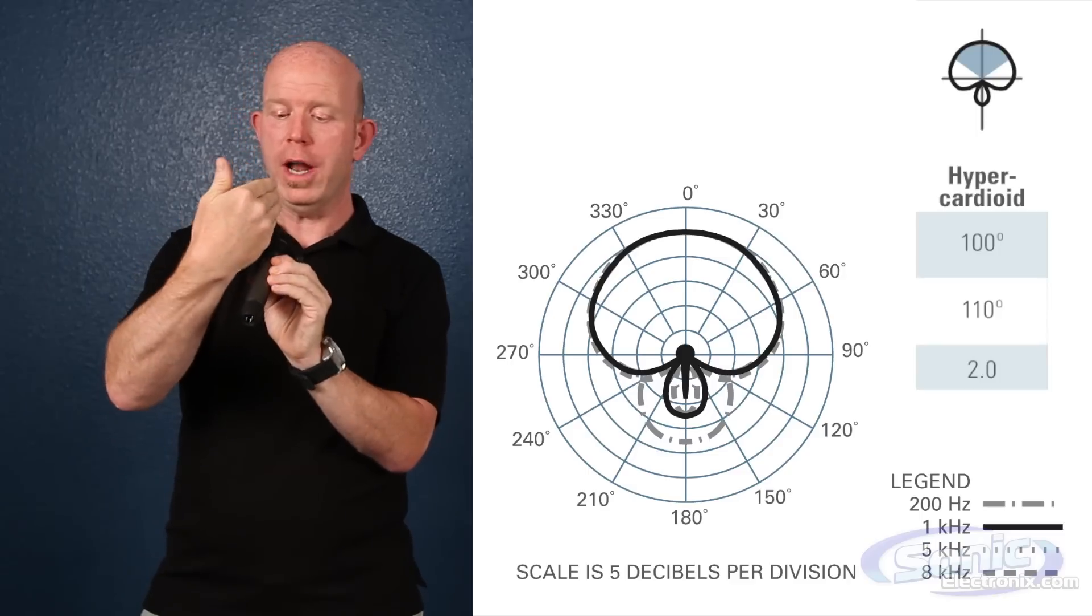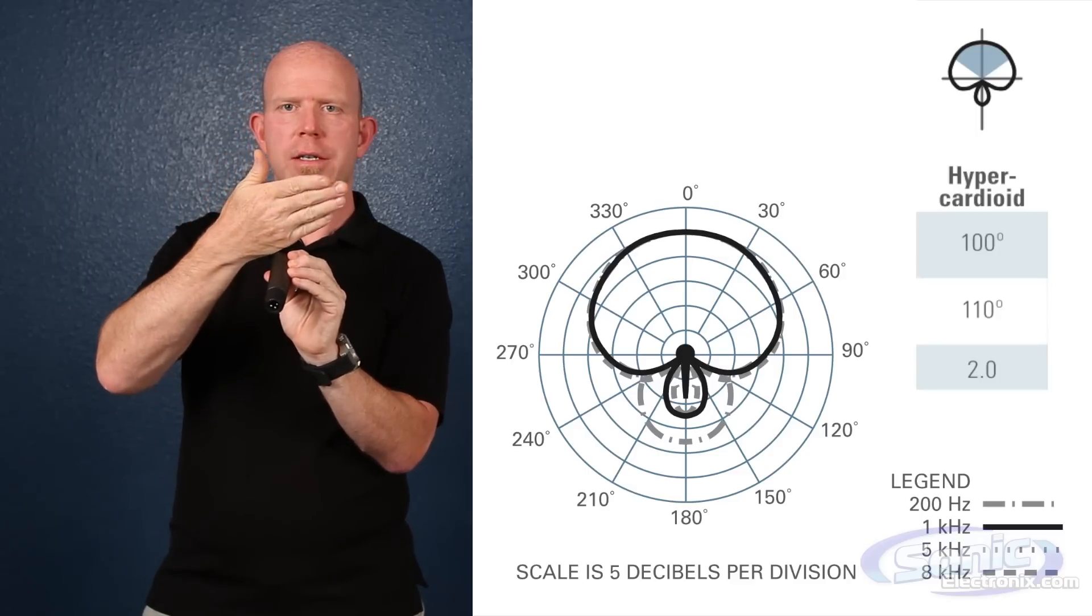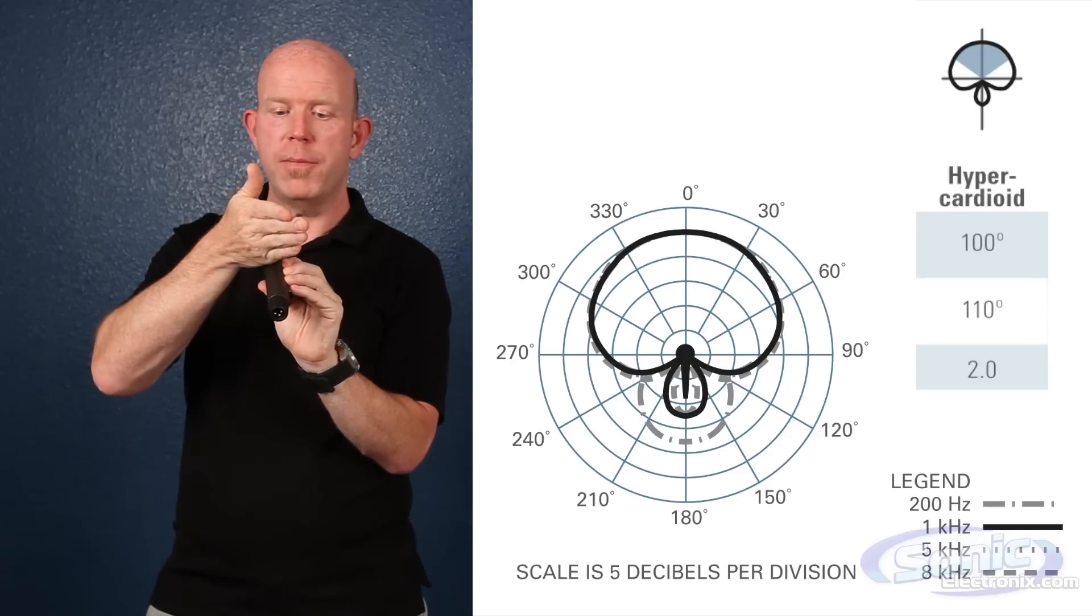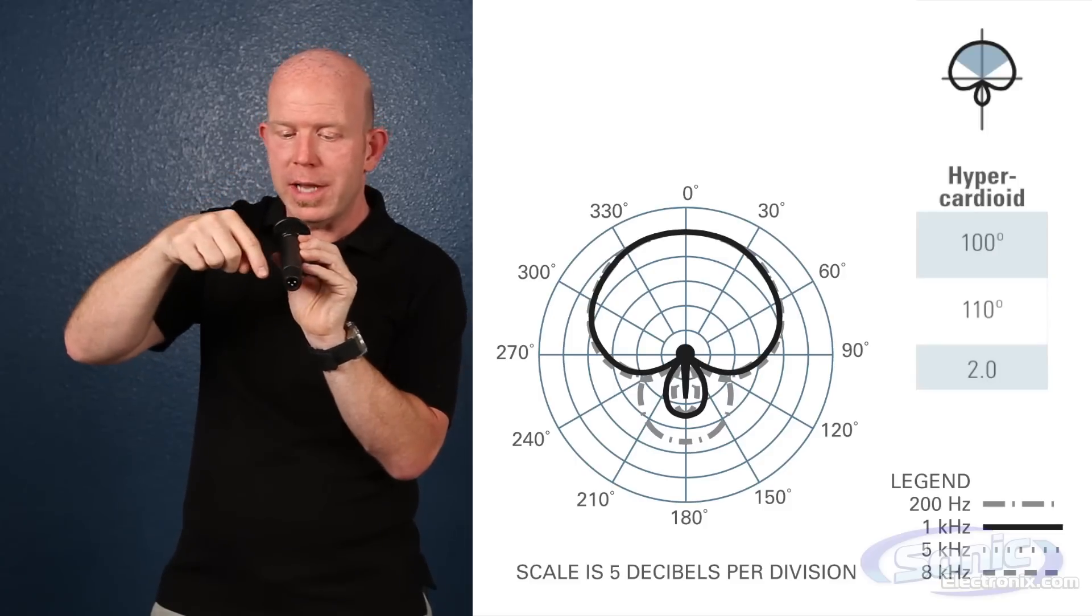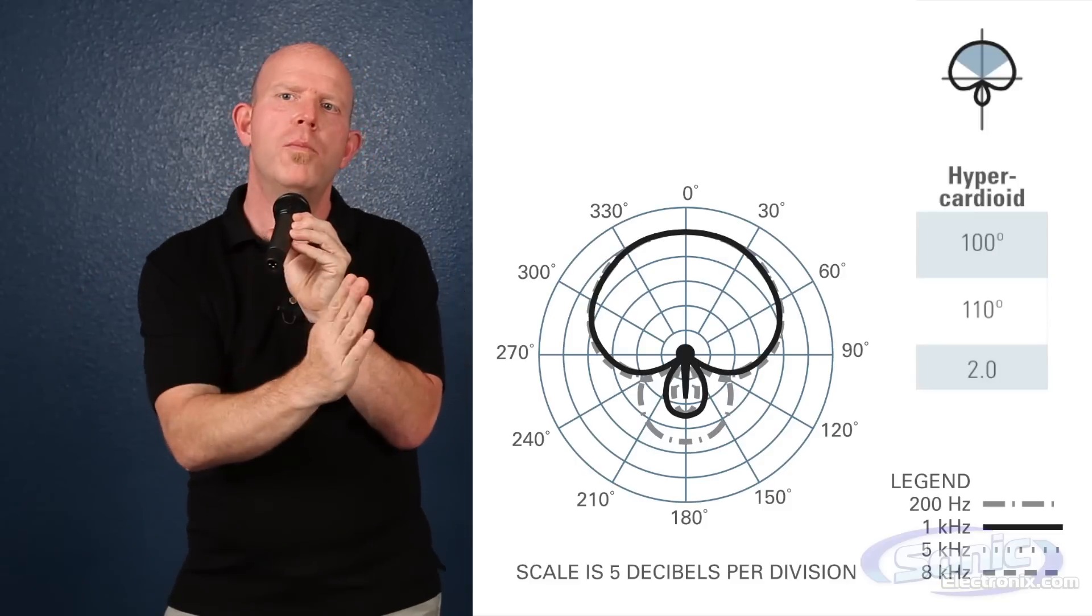So what you do is you find your on-axis and you go 110 degrees. I don't do the math, but essentially if you just do it the other way and go 110 degrees, it has two null points right here.